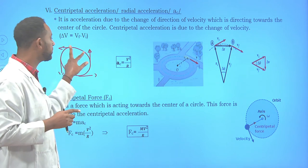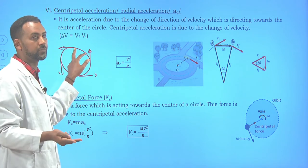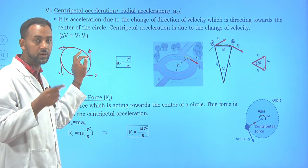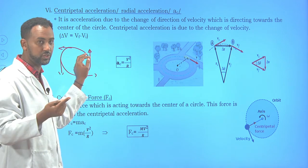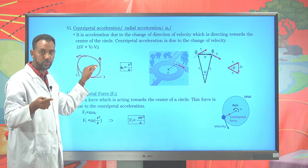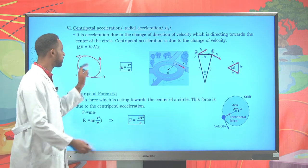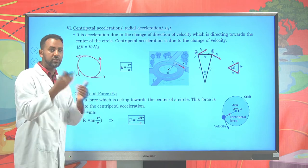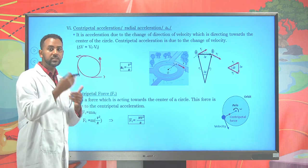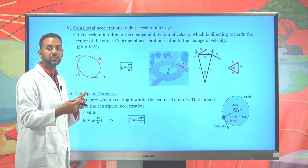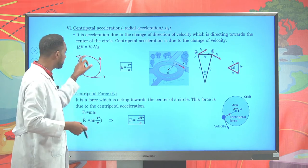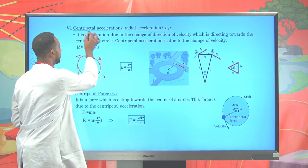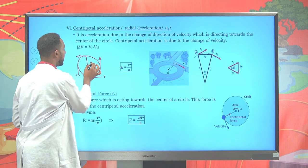Here and here, the two velocities differ due to their direction. We said that two vectors are equal if they are equal in magnitude and the same in direction. Therefore, the velocity is not constant, but the speed is constant for uniform circular motion. Due to the change of direction, there will be an acceleration that acts toward the center, and that acceleration is known as centripetal acceleration.